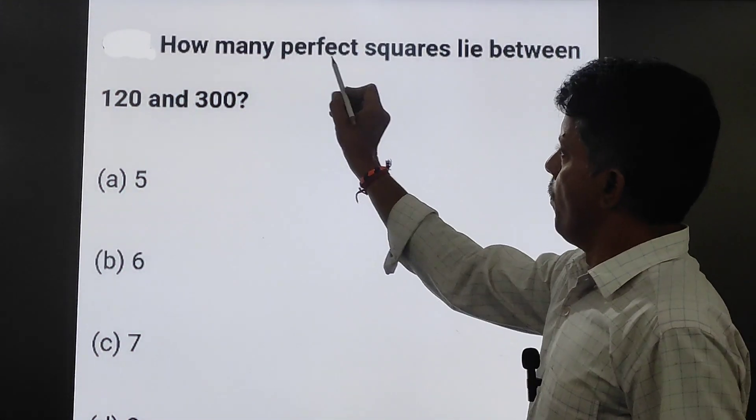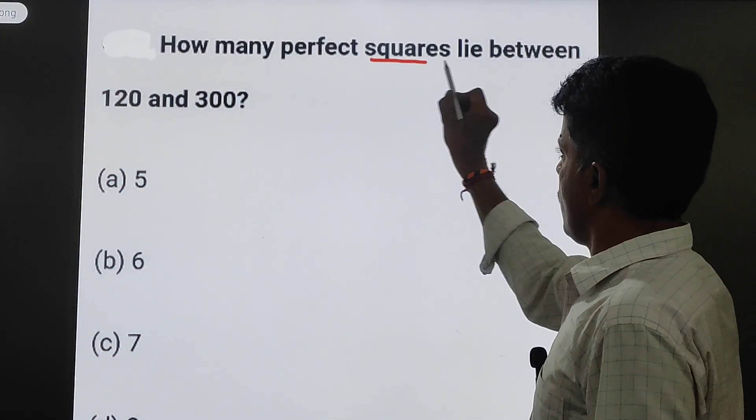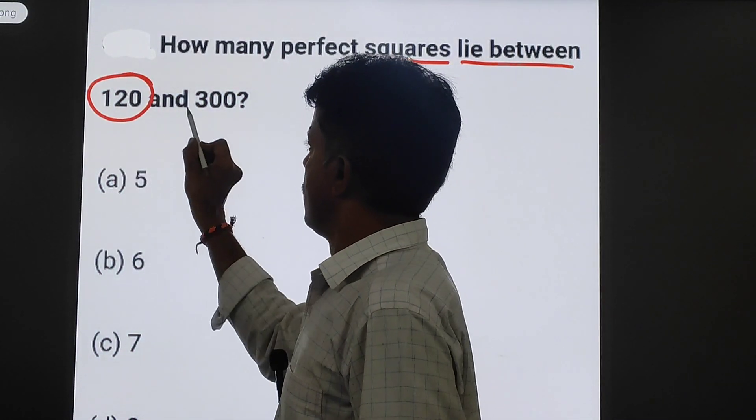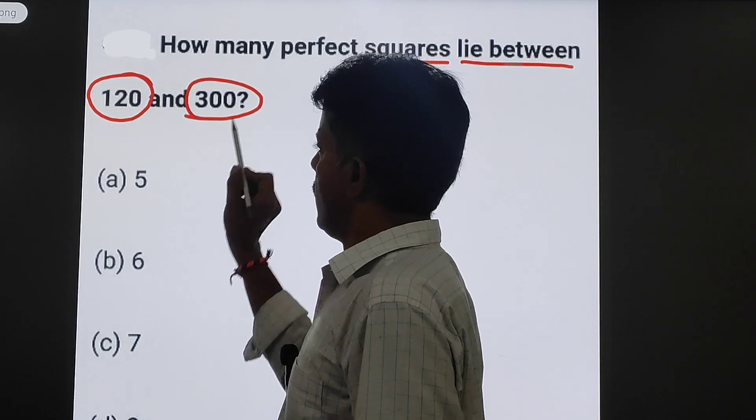How many perfect squares lie between 120 and 300?